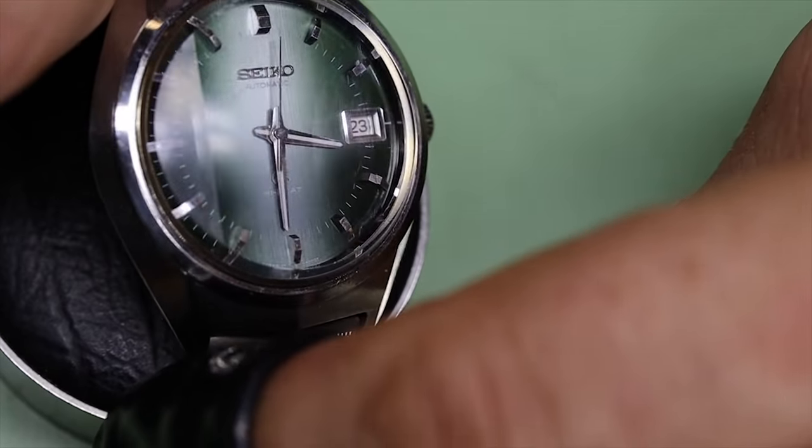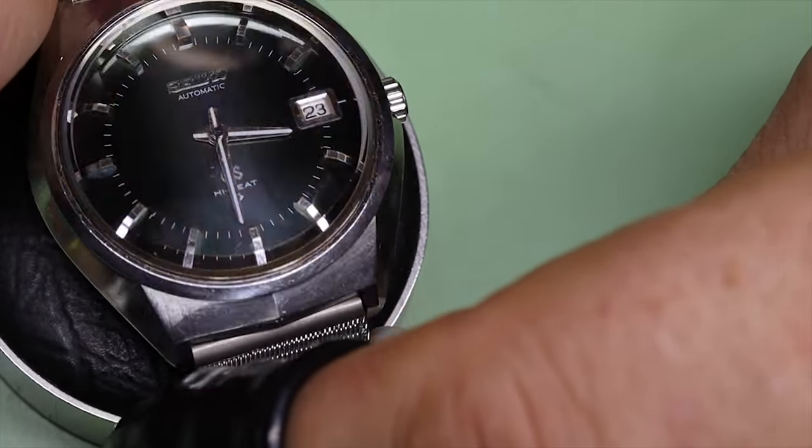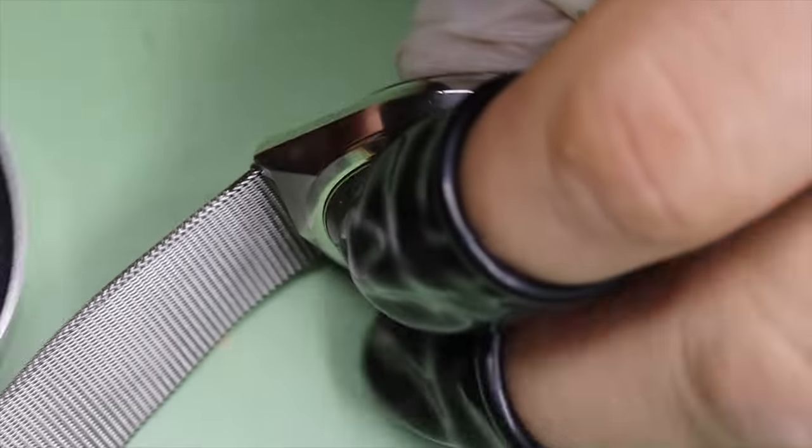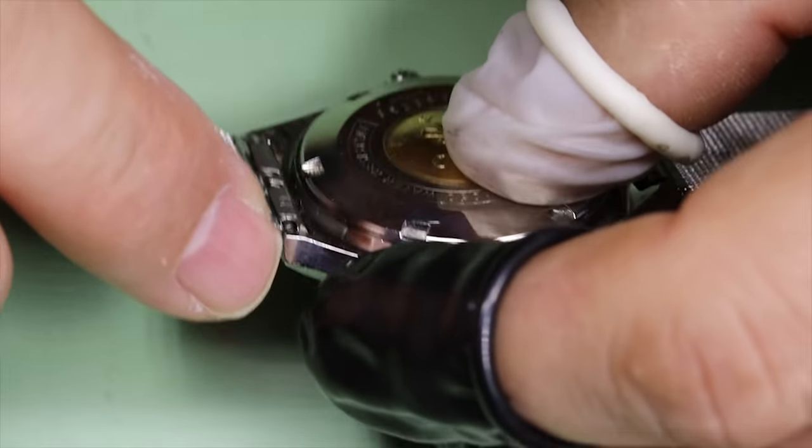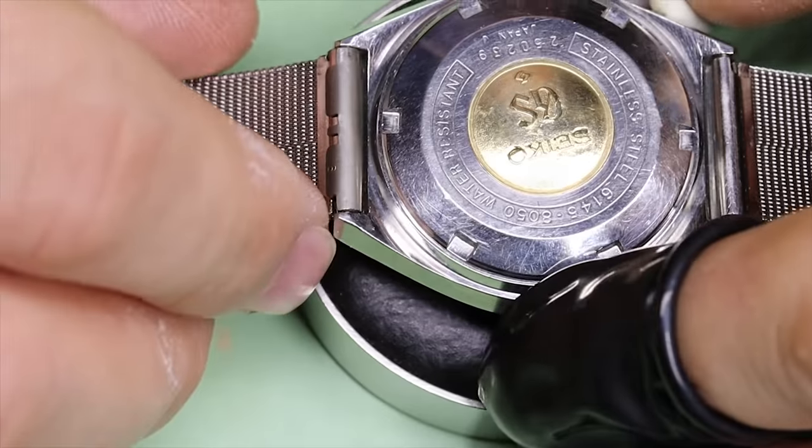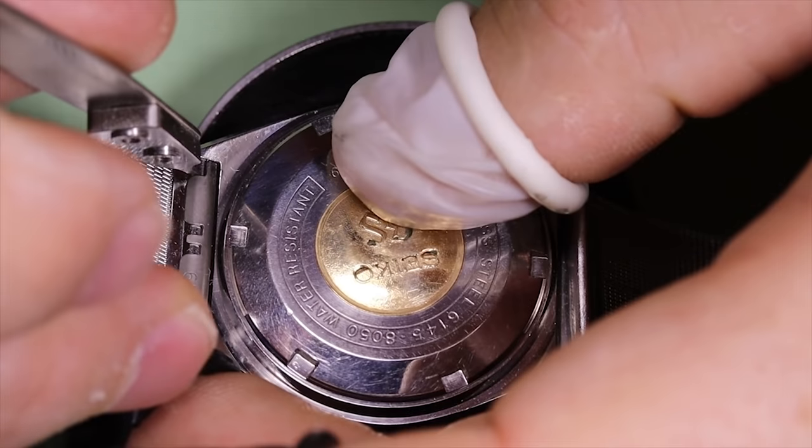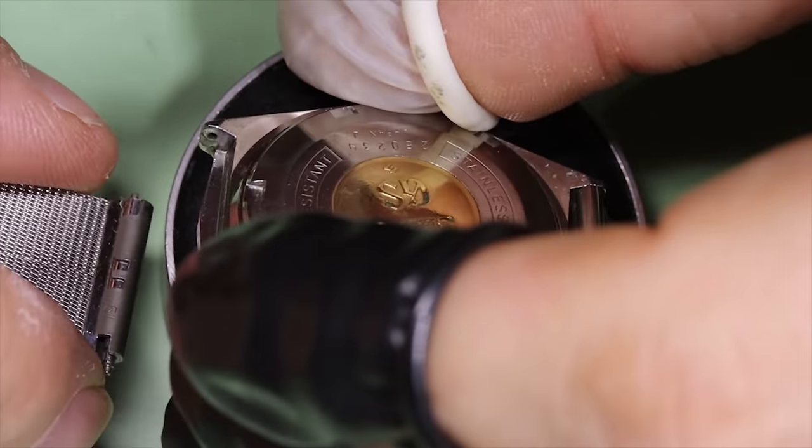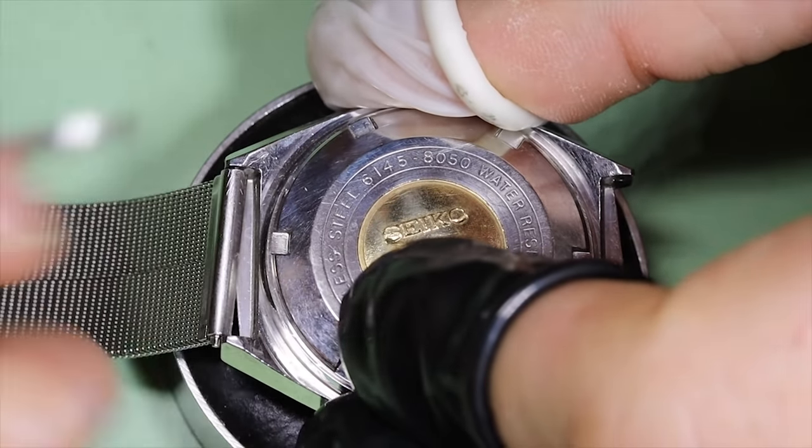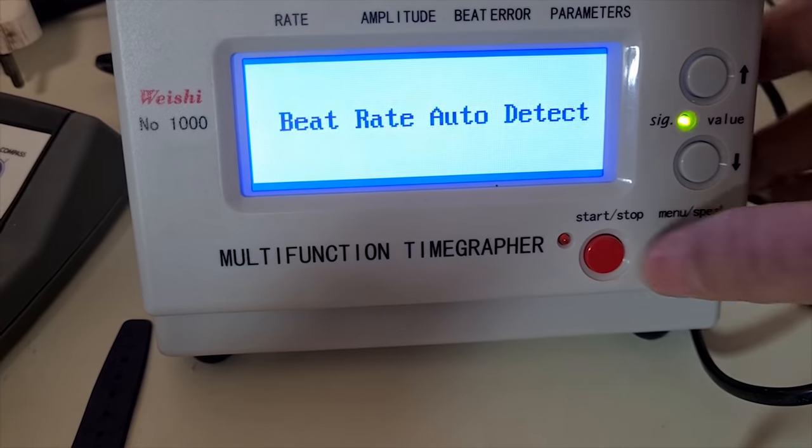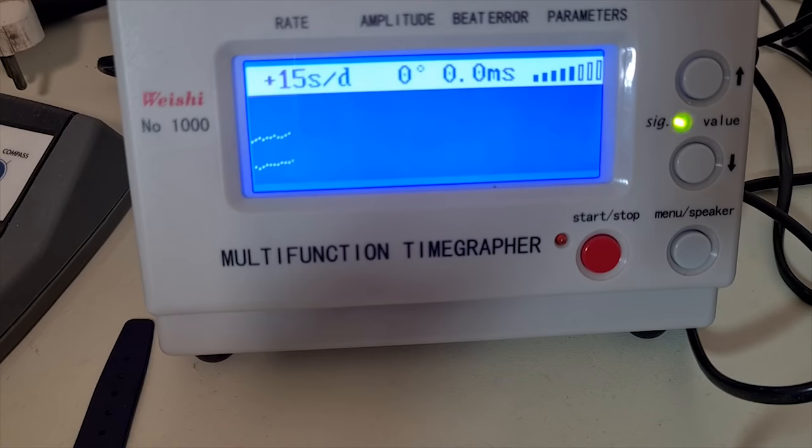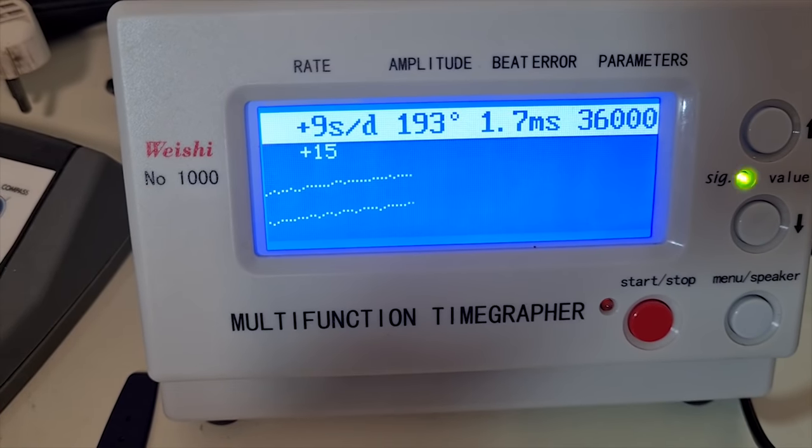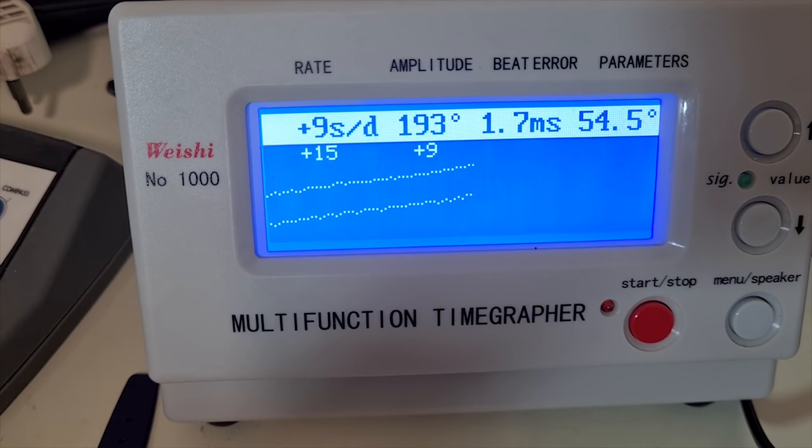The watch itself is really in need of some tender love and care, doesn't run so well. We also see that this gold medallion on the case back is a little bit worn, but there's nothing we can do about that unfortunately. When I said that the watch doesn't run so well, I mean relatively speaking - this would be good for a lot of watches, but this is a very high quality movement, so we should be able to get a little bit more out of it than this.